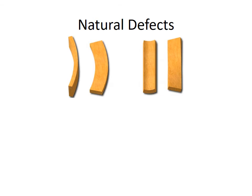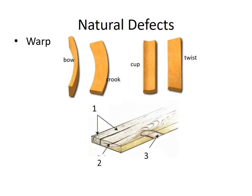Woods have natural defects, such as warp. Within warp we have bow, crook, cup, and twist. We also have checks, shake, and knots. A check is a crack that goes across the growth rings. A shake is when it splits along the growth ring. Knots are caused by branches growing from the trunk.